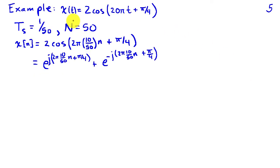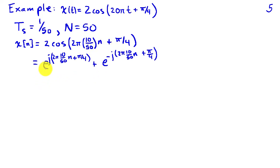We'll illustrate this with an example. The continuous time signal is x of t equals 2 cosine of 20π·t plus π over 4. We use a sampling interval of 1 over 50 and collect 50 samples, giving one second total. Then x of n equals 2 cosine of 2π times 10 over 50 times n plus π over 4, which can be written as a sum of two complex sinusoids at frequencies 10 over 50 and minus 10 over 50. The discrete time spectrum should have magnitude 1 at both frequencies.